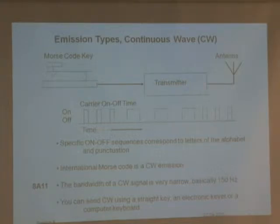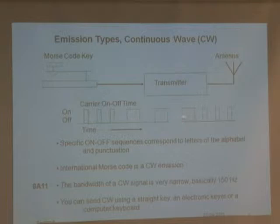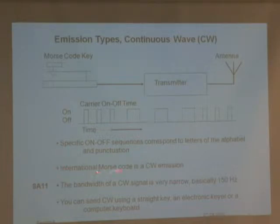How do you get to do 26 letters of the alphabet, commas, periods, and everything else? You do two things: you change the length of time that you're on — there's a short one and a long one — and you change the length of time between the characters. So this happens to be S-O-S. That's what Morse code is all about. Specific on and off sequences correspond to letters of the alphabet and punctuation. International Morse code is called CW, continuous wave. How much frequency does that take up — that's called bandwidth — when that transmitter transmits? About 150 hertz.